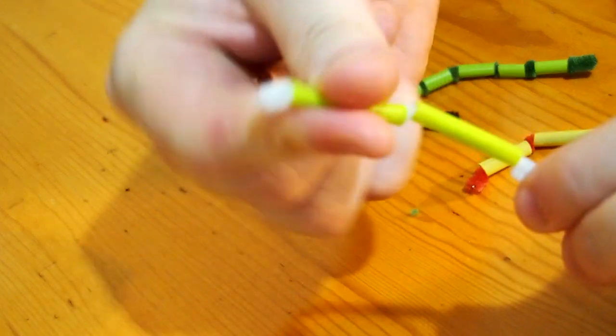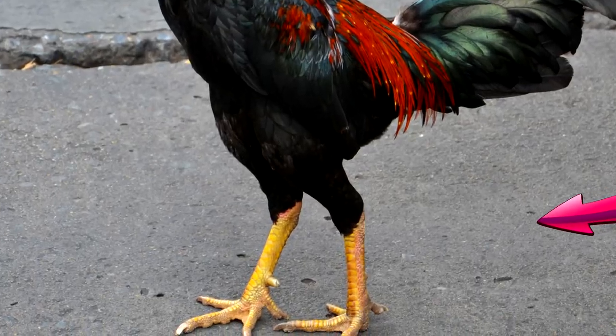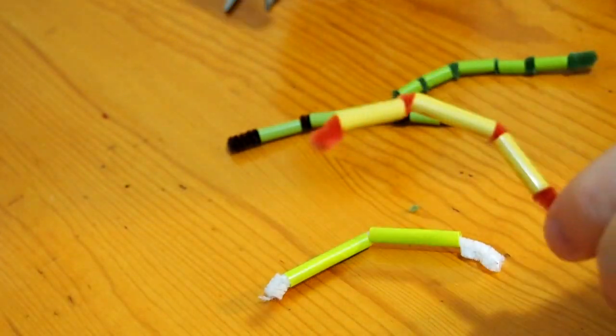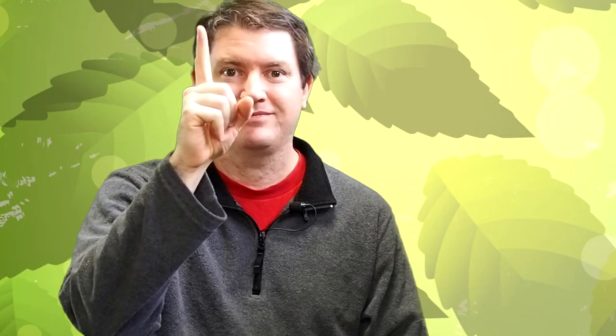The first toe has two sections. Look at your thumb. There's two sections and two joints. On a chicken, it's that little one in the back. The second toe has three sections. Three knuckles, three sections. Your index finger is a good guide if you need help.